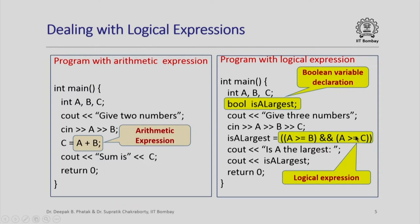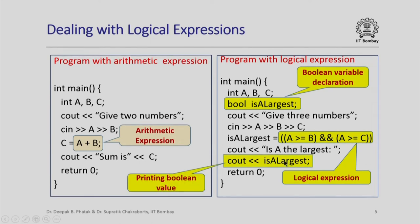This logical expression will evaluate to a Boolean value — true or false — and that will be assigned to the Boolean variable is_a_largest. Finally, the program prints out the value of is_a_largest, and we will see what happens when we print out a Boolean value. The main function then executes return 0 to hand control back to the operating system.